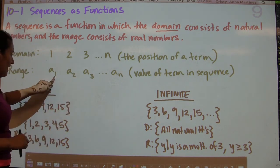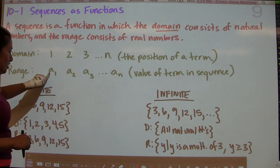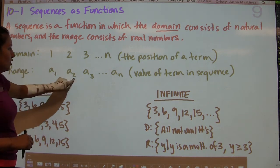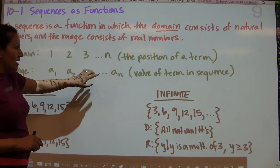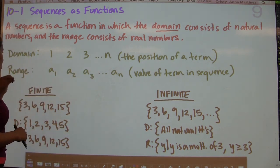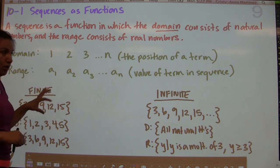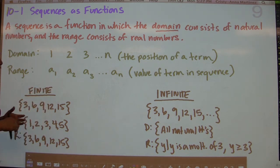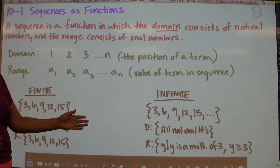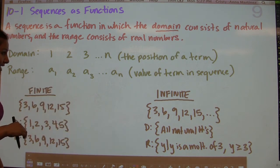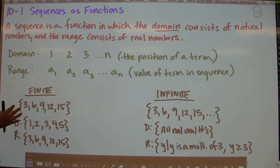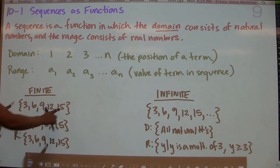The 1 here indicates that it's basically attached to the first term, second term, third term, and so on and so forth. So the range is the value of the term in the sequence, and you can have a finite sequence or you can have an infinite sequence. A finite sequence means that it terminates — it stops at some point.